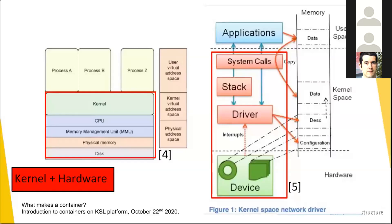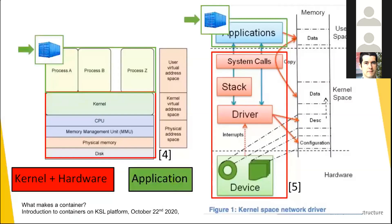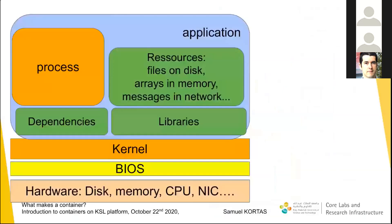The other layer is all the rest — called the user layer where the applications and processes are running. Here's the thing: a kernel is so close to the hardware, so deep, so imbricated, that if it needs to be changed, patched, or amended, it usually requires rebooting the whole machine. At the opposite, everything in the green zone can be modified, appended, enriched more easily. Every container-related operation will occur in this green zone. To my knowledge, a container cannot, absolutely cannot, change anything in the kernel zone.